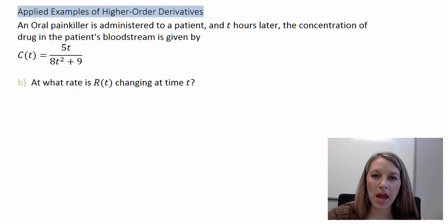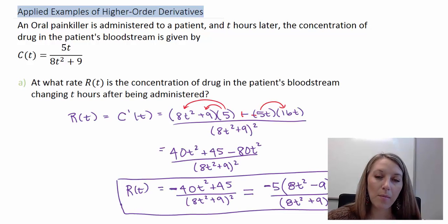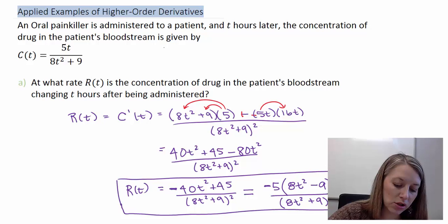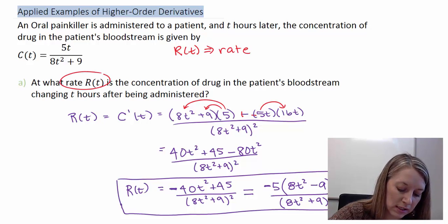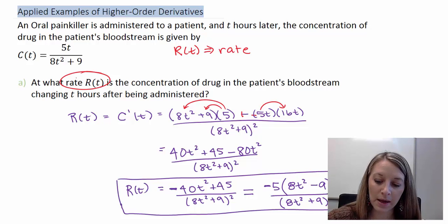Let's go back and look at Part A real quick. Part A asks at what rate R(t), meaning the rate is R(t). So when we compute the R(t) equation, that's going to give us our rate equation. Rate and R(t) are one and the same.